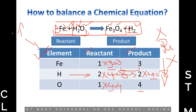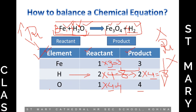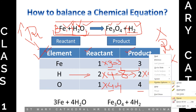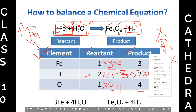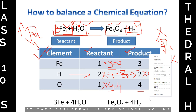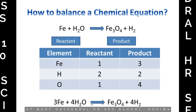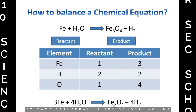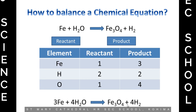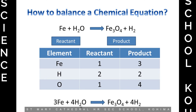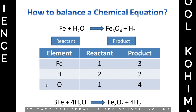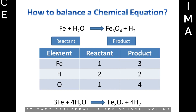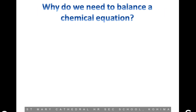Rechecking is a must, even after you think you are done. Your final answer should be written with the coefficients in front of each chemical. After balancing, the answer is: 3 Fe + 4 H₂O → Fe₃O₄ + 4 H₂. Four multiplied by two is eight — correct. I will give you some equations that have already been solved so you can use the table method to verify them yourself.